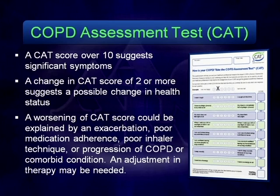What we have found is that a change in the CAT scores might have significance. If there's a worsening in the CAT score, something's going on — maybe it's an exacerbation, maybe it's poor medical adherence or incorrect inhaler use, maybe it's progression of the disease. Something's not right, and it might lead to a change in therapy. As a clinician, this is very useful to have filled out before you see the patient. I often have my patients fill it out before they even come into the room.